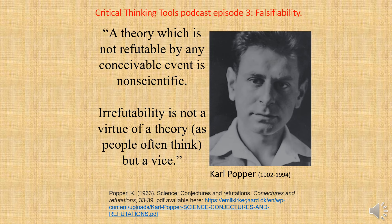Popper goes on in section two to discuss examples. He states Einstein's theory of gravitation clearly satisfied the criterion of falsifiability. On astrology he says: 'Astrology did not pass the test. Astrologists were greatly impressed and misled by what they believed to be confirming evidence, so much so that they were quite unimpressed by any unfavorable evidence. Moreover, by making their interpretations and prophecies sufficiently vague, they were able to explain away anything that might have been a refutation.' The less precise a theory, the more unfalsifiable it becomes.